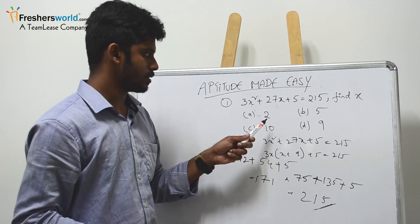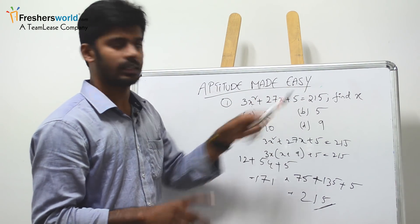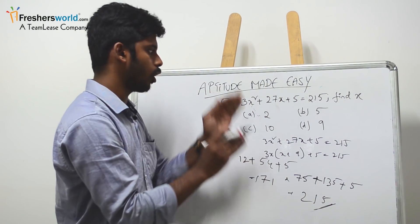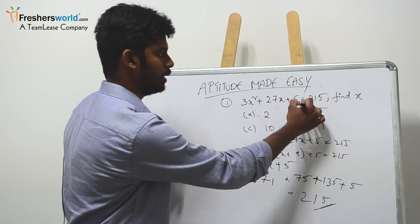So the answer is 215. Instead of solving the entire problem, if you keep these options in place of x and if it tallies - LHS should equal RHS - then the option is right. We got the answer as 215, so answer is B.